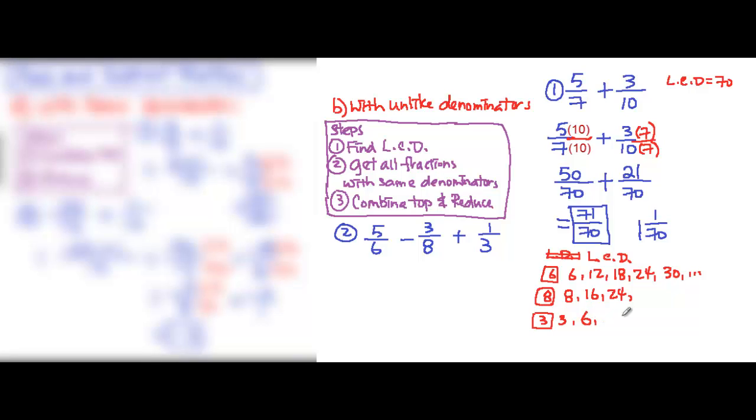15, 18, 21, 24. Okay, 24 would be the first one all three of them have in common as multiples. So that's the lowest common denominator.